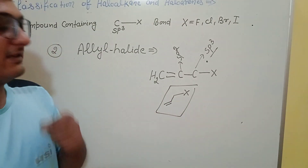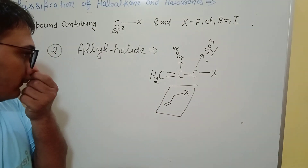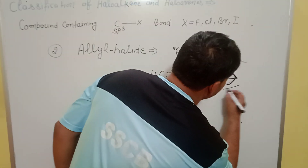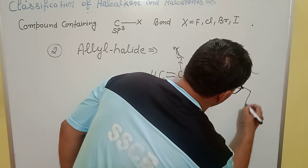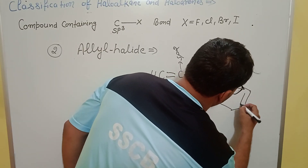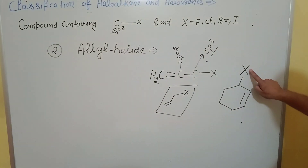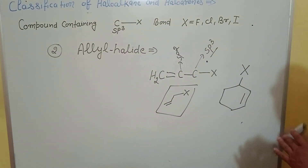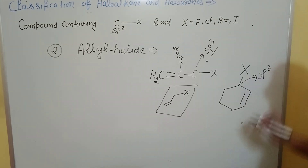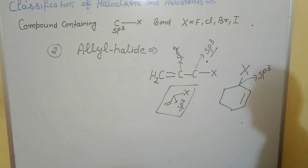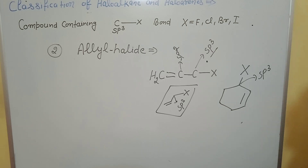This is the allylic form. When a ring system has the halogen attached to an sp3 carbon that is adjacent to an sp2 carbon, that form is also named an allylic halide.